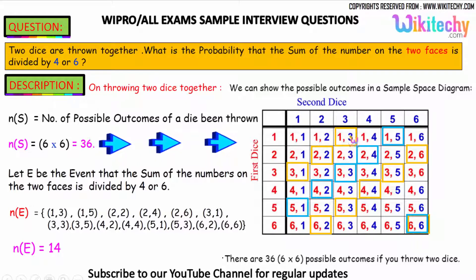So (1,3) adds to 4, which is divisible by 4. (2,2) adds to 4. (3,1) adds to 4. (6,2) adds to 8, divisible by 4.